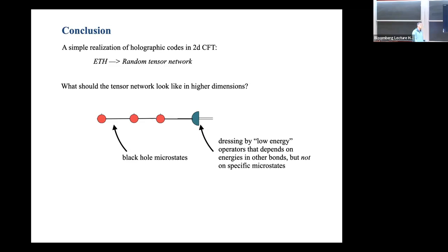Let me conclude. I've described a simple realization of holographic codes in a 2D CFT. This gives a concrete model to test ideas about bulk reconstruction, non-isometric embeddings, and properties of pure state black holes. The key idea is ETH in a strong sense — applying it to all operators in the theory, stronger than the usual ETH. This strong version of ETH gives you random tensor networks in some regime of the OPE. We used Virasoro heavily for the actual calculations, but the general idea could be applied more generally, including in higher dimensions, though explicit calculations would be harder there.